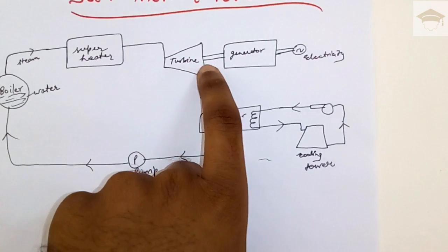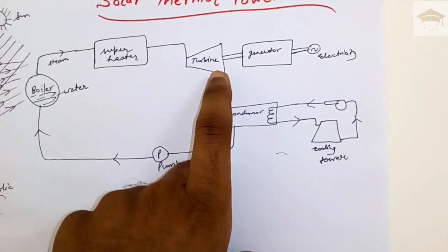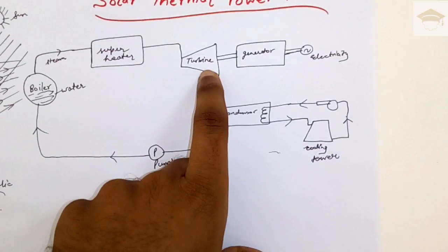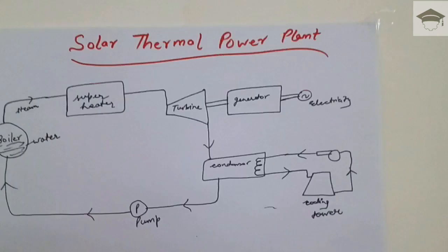The generator, the electric generator, is coupled to the turbine. The rotor in the electric generator rotates and by Faraday's law, electricity is produced.